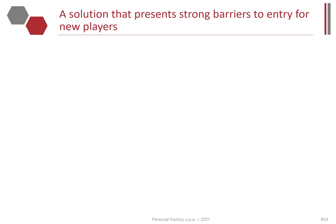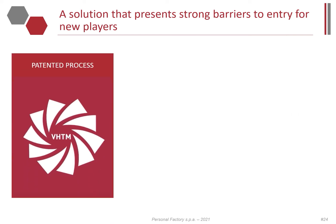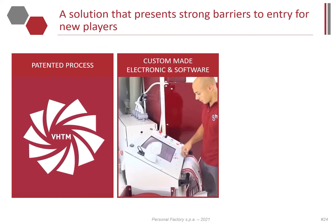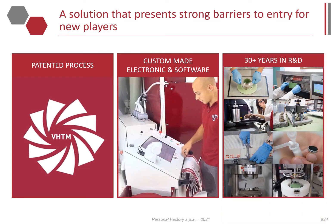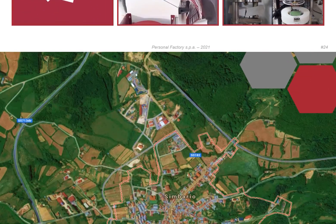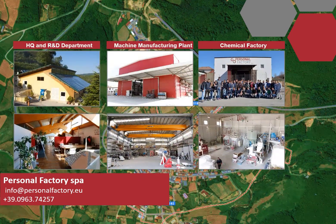Personal Factory presents strong barriers to entry for new players: patents on equipment and on-site tuned workflow and layout; more than 4 million lines of code developed from scratch in our software ecosystem; more than 200 different standard dry mix products in portfolio, more than 600 customized products; and a large R&D center with more than 30 years of experience. Personal Factory is the only fully integrated company on the market with all technology aspects produced in-house. If you are a potential customer or investor, contact us at www.personalfactory.eu.